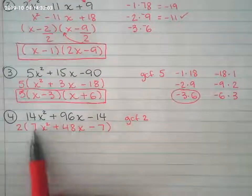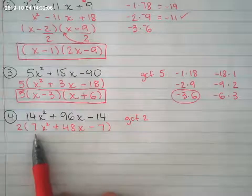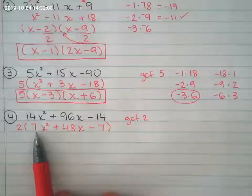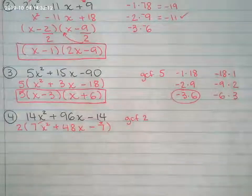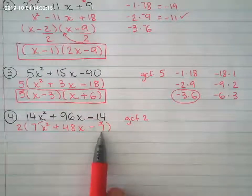Now I'm going to have to factor what I have in parentheses right there. The leading coefficient is 7. So I'm going to have to get the 7 and the front multiplied by the last number right there in the back.